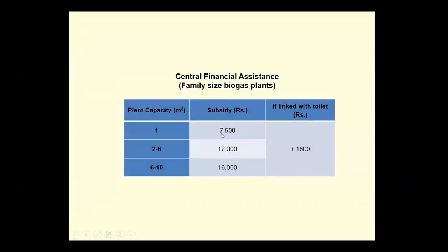Subsidies are available for biogas plant construction. The government gives ₹7,500 per cubic meter. In Tamil Nadu, plants of 2 to 6 cubic meters receive ₹12,000 subsidy, while 6 to 10 cubic meter plants receive ₹16,000. If the biogas plant is linked with a toilet, an additional ₹1,600 subsidy is provided. These schemes are currently available.